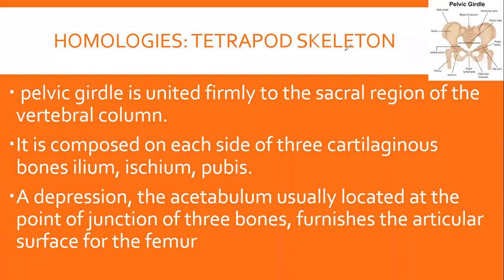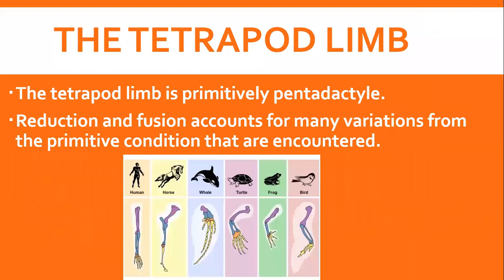اس سے بھی زیادہ دلچسپ بات یہ ہے کہ تمام tetrapods کی limbs — چاہے arms ہوں یا legs — بنیادی طور پر pentadactyl ہیں۔ Penta کا مطلب five اور dactyl کا مطلب digits یعنی انگلیاں۔ تمام tetrapods کی limbs میں، چاہے اگلی ٹانگیں ہوں یا پچھلی، پانچ پانچ انگلیاں بنیادی طور پر موجود ہوتی ہیں۔